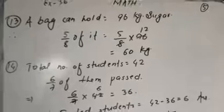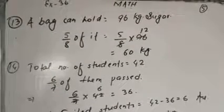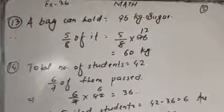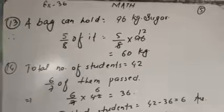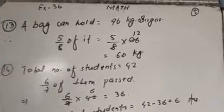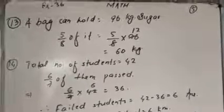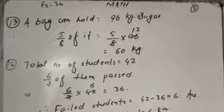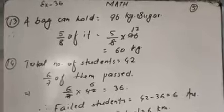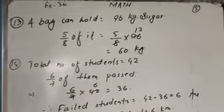Students, question number 13: A bag can hold 96 kg sugar. How much sugar is there in the bag when it is 5 by 8 full? You can say that in a bag, 96 kg sugar can be filled. If this bag is 5 by 8 full, tell us how much sugar is there in the bag.